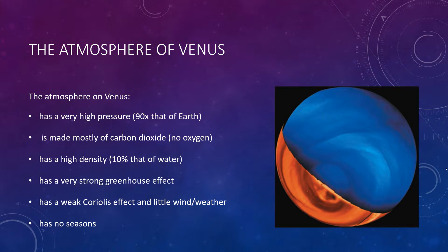Venus's atmosphere consists almost entirely of carbon dioxide. It has virtually no molecular oxygen, so you could not breathe the air even if you cooled it to a comfortable temperature. Moving through the thick air near Venus's surface would feel like a cross between swimming and flying — its density is about 10% that of water.